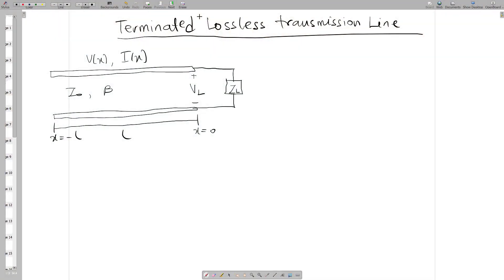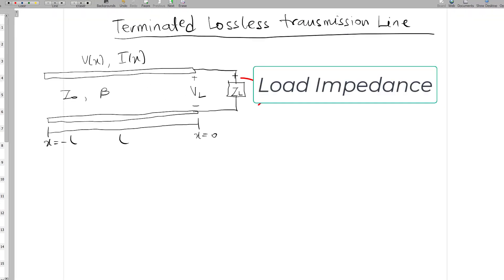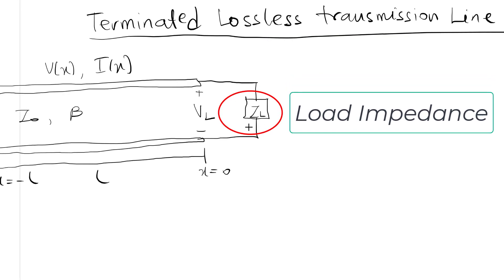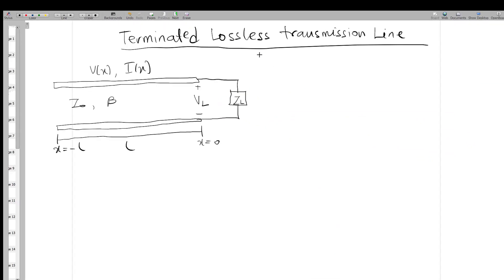Hello everyone and welcome to microwave engineering. Today we are going to look at the transmission line that has been terminated. Looking at this diagram, we can see that this transmission line has been terminated with a certain load impedance, that is Z_L.